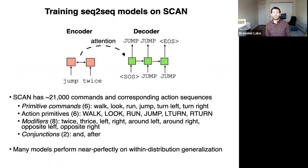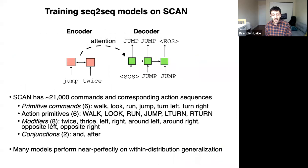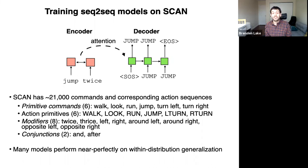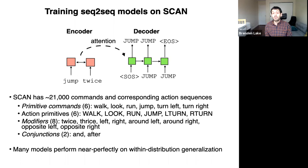Just to give some other details: there are 21,000 commands in the SCAN dataset overall, synthetically generated. There are six different primitives — walk, look, jump, run, turn left, and turn right — with a corresponding action primitive for each. There are also different modifiers like twice, thrice, left, right, around left, around right, opposite left, opposite right, and conjunctions like 'and' and 'after.' This produces a compositional space of 21,000 possible instructions, since recursion is not allowed.